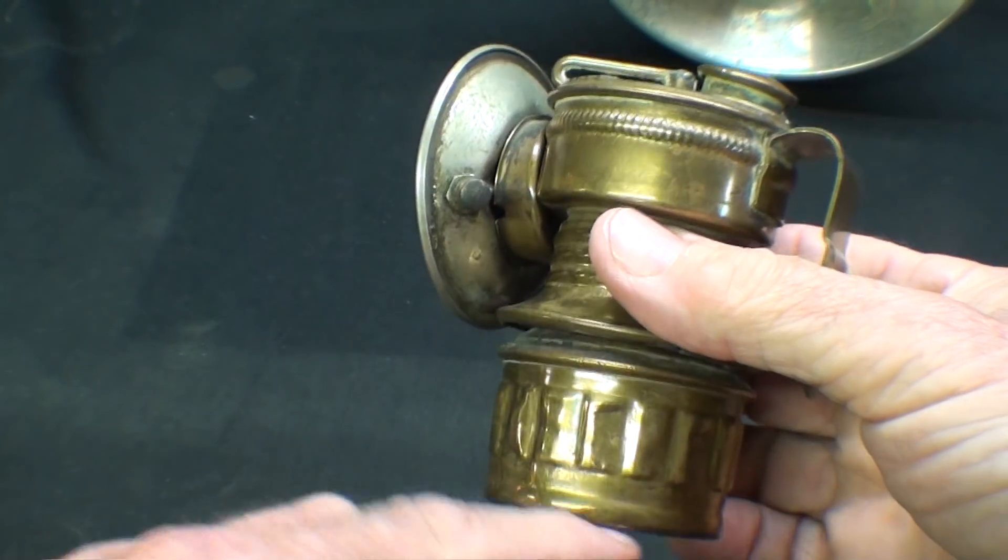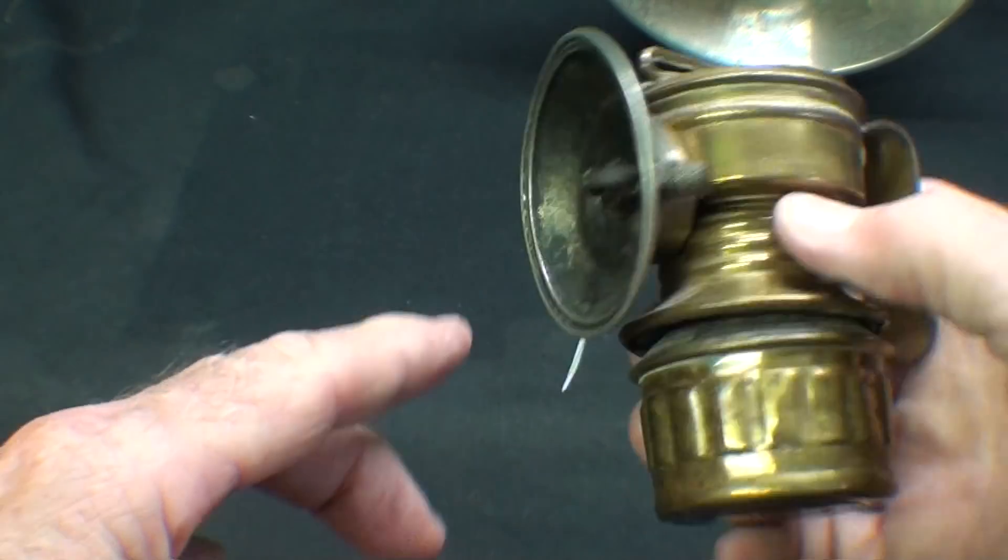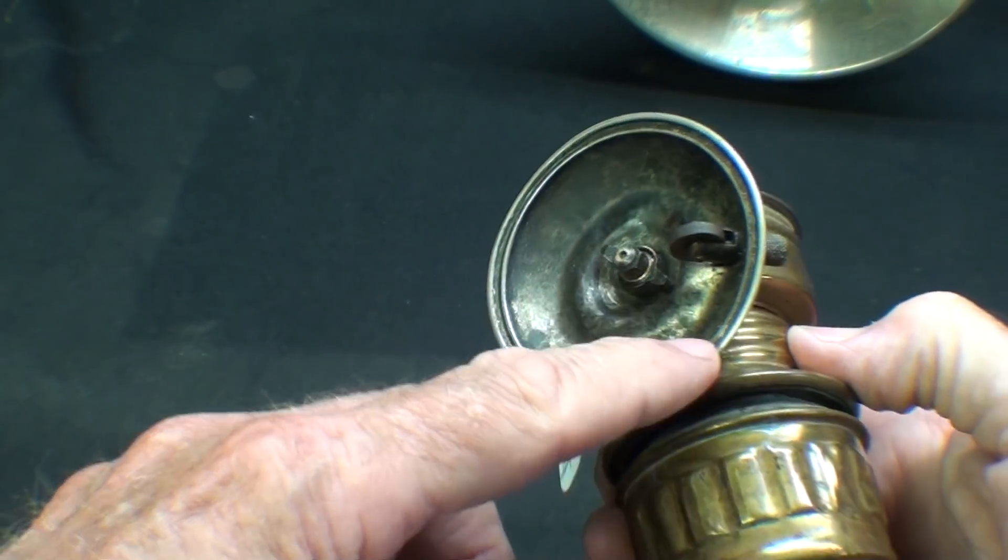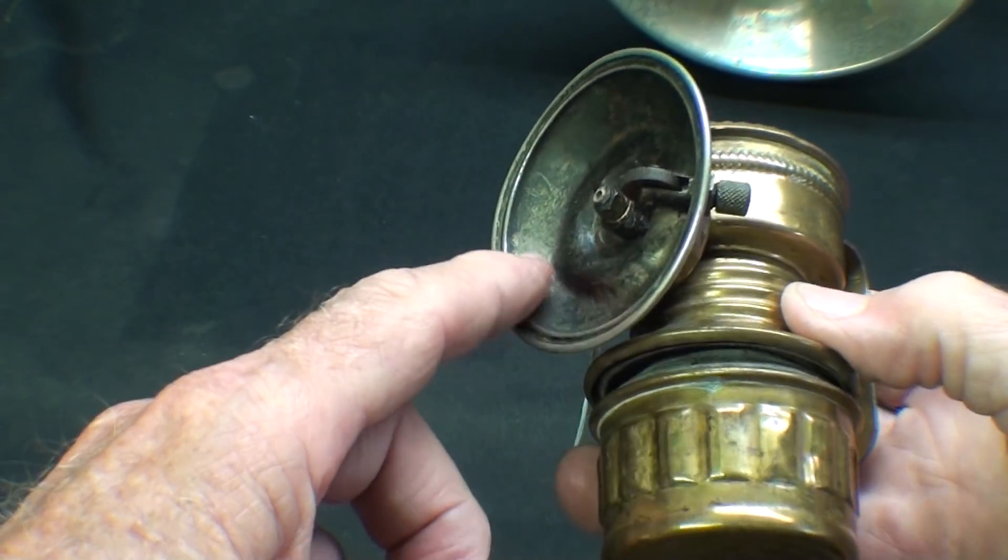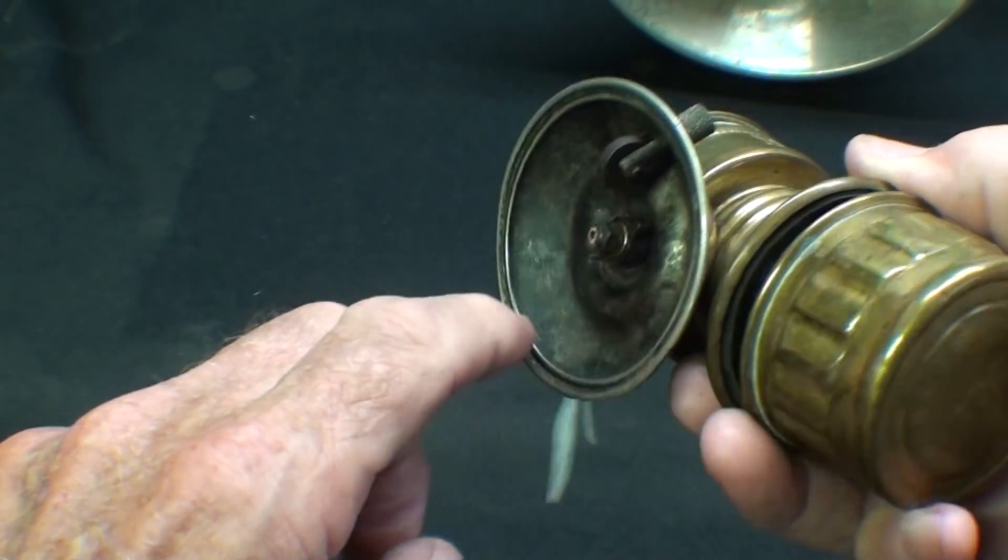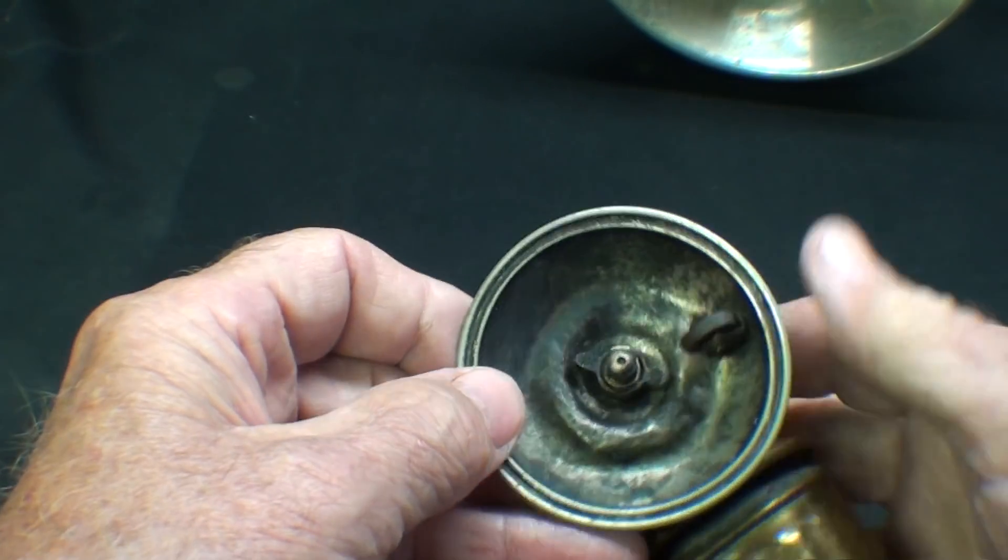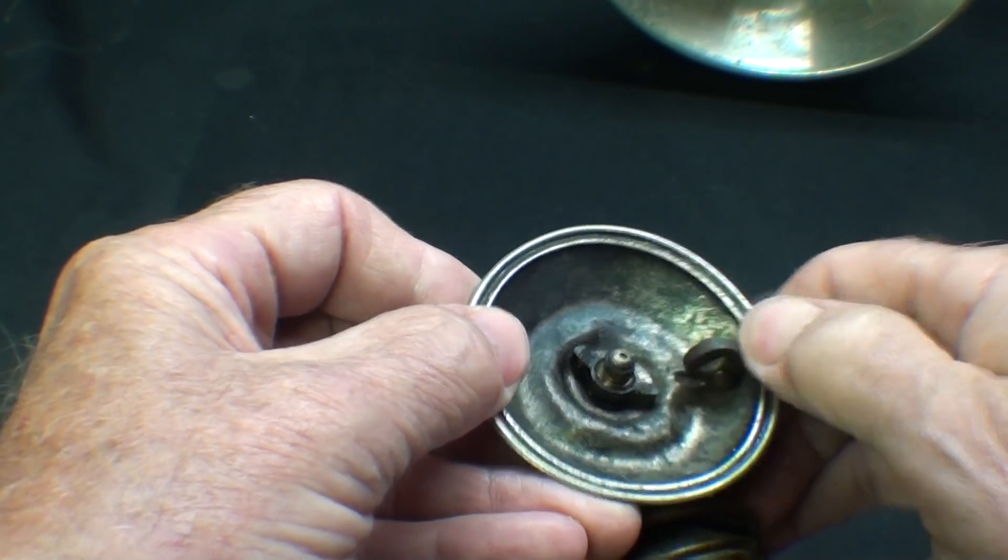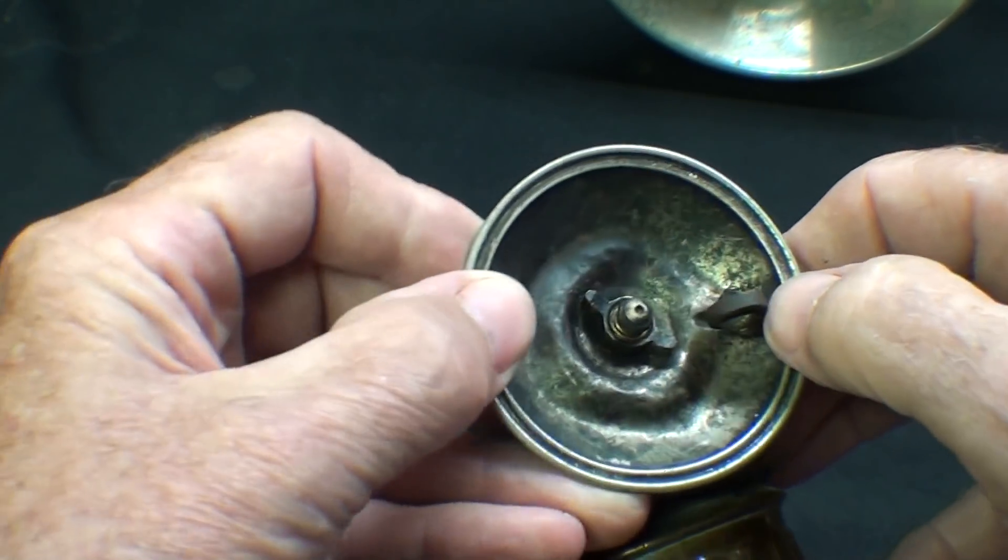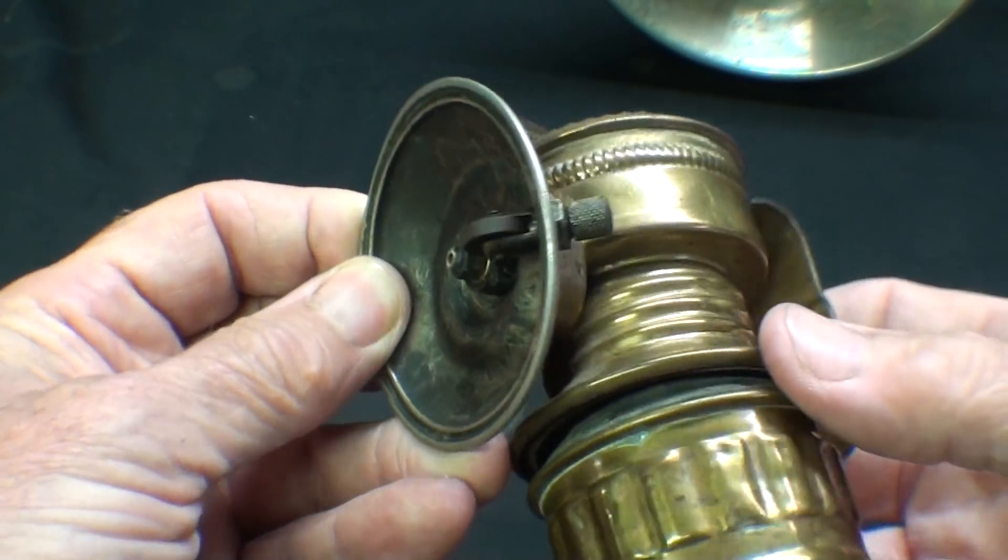The carbide goes in the lower part, water goes on top, and the flame comes out here with a parabolic reflector. You can see this has been dropped many times and the reflector is crushed, so the shape is pretty much destroyed. This is the flint striker, and I tried to repair it, but the wheel is worn out.